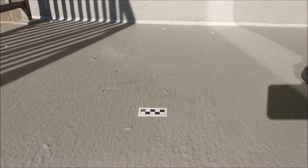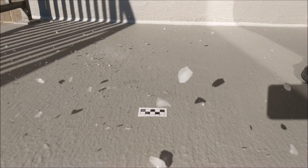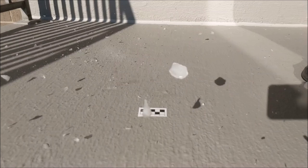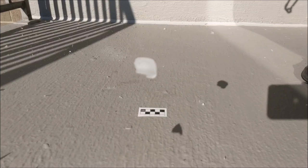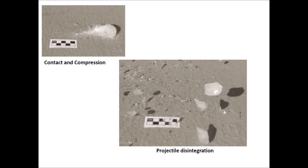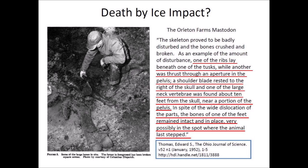Here is another example of an ice projectile impacting a concrete target. A large portion of the ice projectile disintegrates when it hits the hard surface, and some big pieces are scattered from the point of impact. Every impact is different but they all have common characteristics. The glacier ice boulders impacting solid ground could not liquefy the ground to form Carolina Bays, but they fragmented into high-energy ice shards that were lethal to the megafauna.